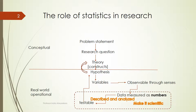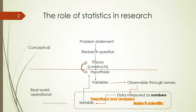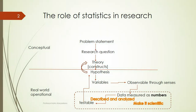One way to understand the role of statistics in research is to look at what we do in research. We identify an area of interest or a problem statement, and from that, we identify a specific question or problem that we want to look at. Then we inform ourselves with what has happened and what was found in relation to our research question.